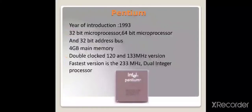The Pentium processor was introduced in 1993. It came in 32-bit and 64-bit versions with a 32-bit address bus and 4 GB main memory. It used double clock versions of 120 and 133 MHz, and the fastest version was 233 MHz. It was a dual integer processor.